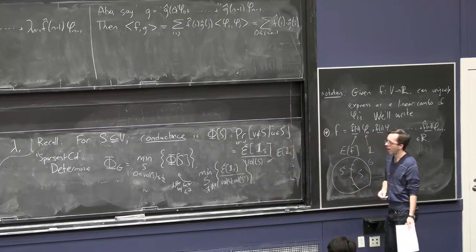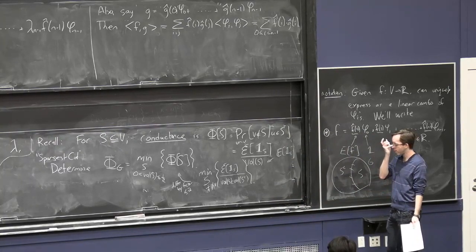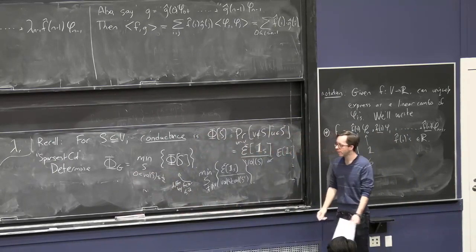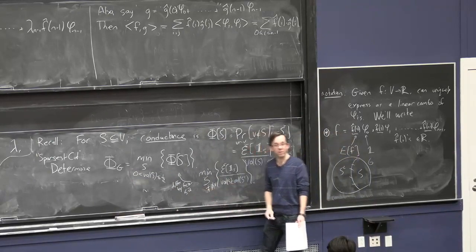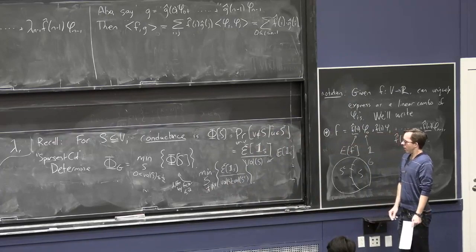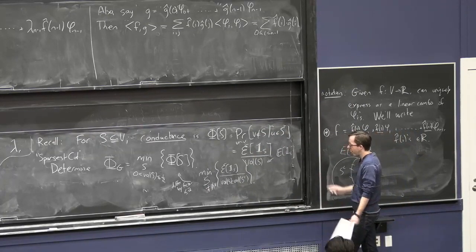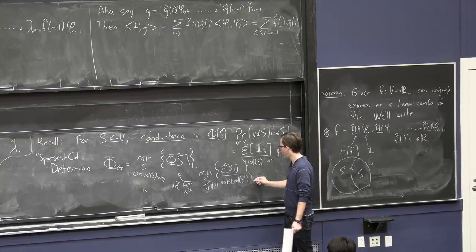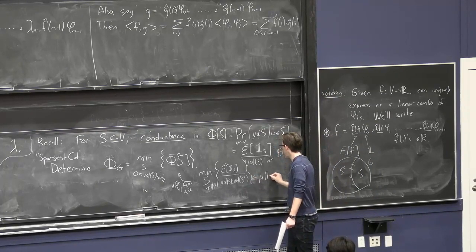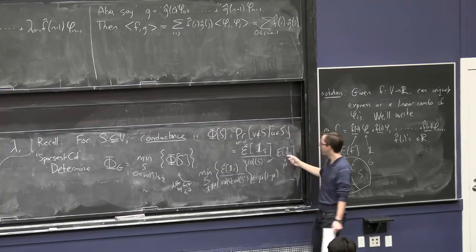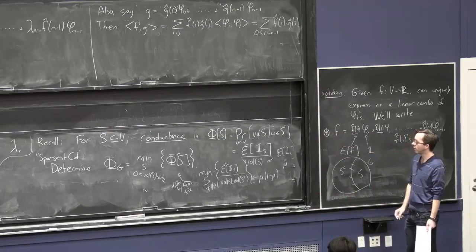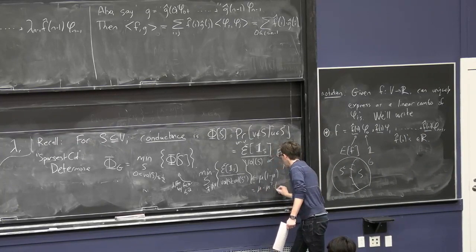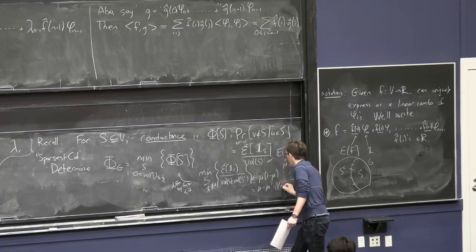So, instead what you can look at is the minimization of this quantity, which, this is the fraction of edges on the boundary of the set S, these edges here. In the denominator, you can put the volume of S times the volume of its complement. And you can basically minimize over all S here. Well, it should not be the empty set or everything. And what I'm saying is, these two quantities only differ by a factor of two. At most two. You know, one of these is always smaller than the other one, because you're always inserting here a number that's between zero and one in the denominator.